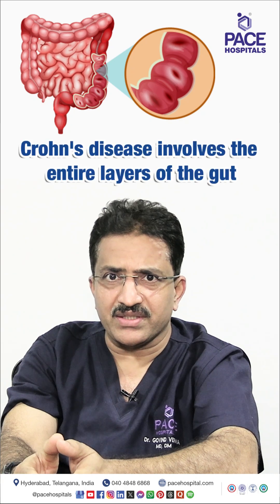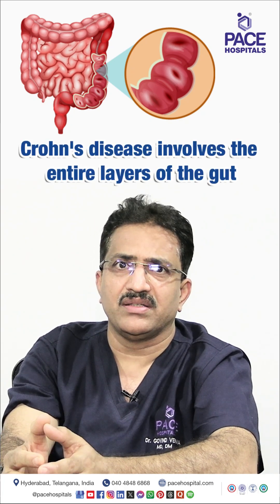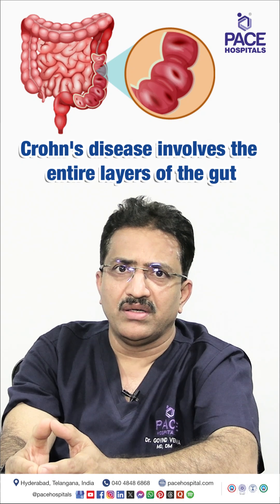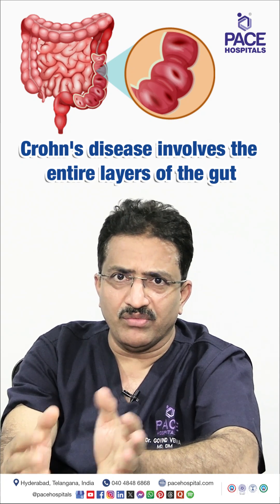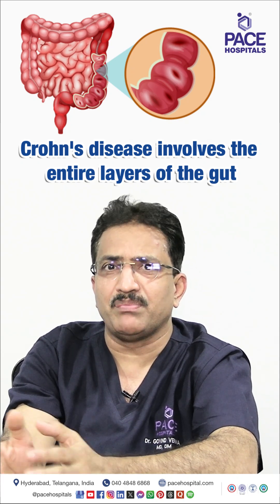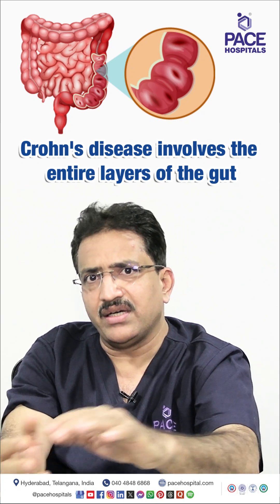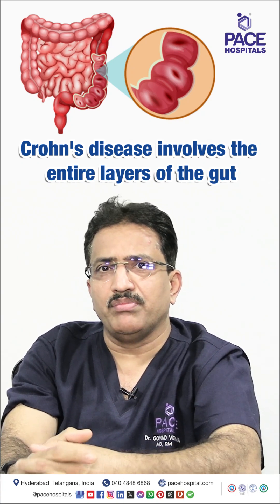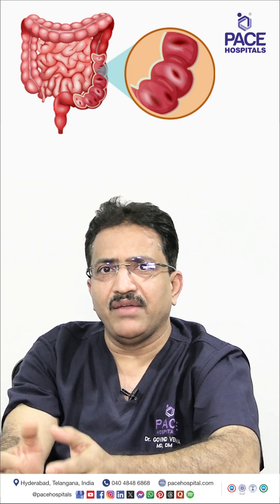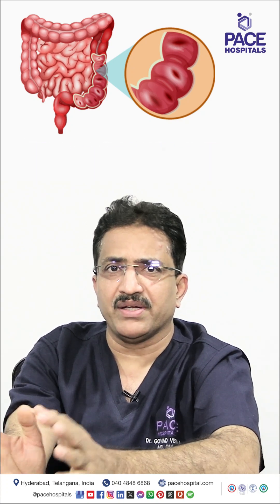Another difference is the extent of involvement. In Crohn's disease, it involves the entire layers of the gut — this is called transmural involvement — and the involvement is usually patchy, referred to as skip lesions. In ulcerative colitis, it is a continuous involvement. Based on the extent of disease, the patient can have different presentations, severity, and complications.